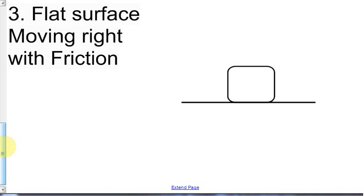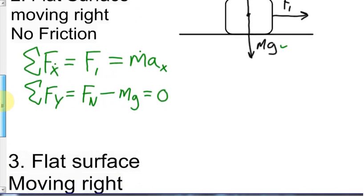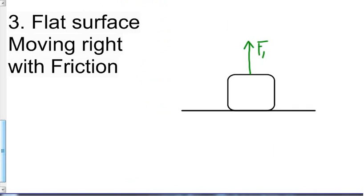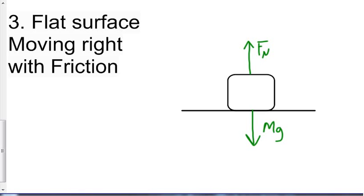Next scenario: flat surface, moving right, this time with friction. The forces are: normal force up, mg down, and a force FA pushing to the right. I'll draw the forces from the side of the box rather than the center — sometimes I write info like mass inside the box, so this keeps things cleaner. Since the box moves right, friction acts to the left, opposing the motion. We call that F sub F.